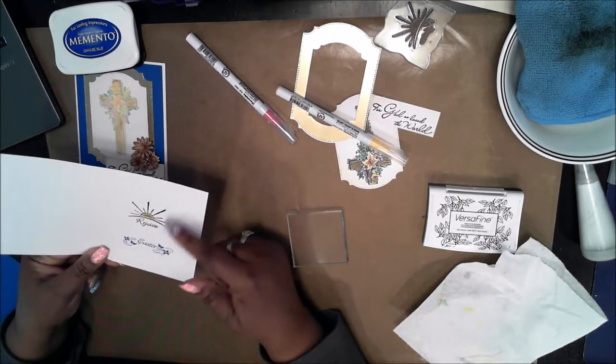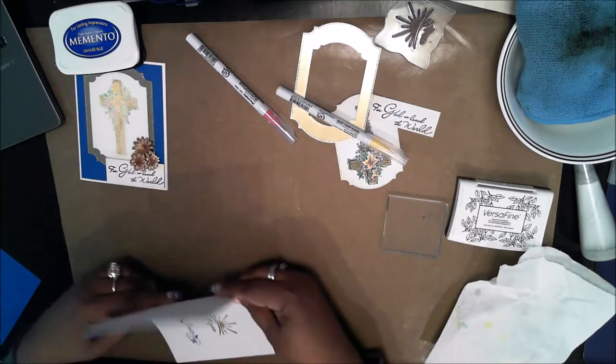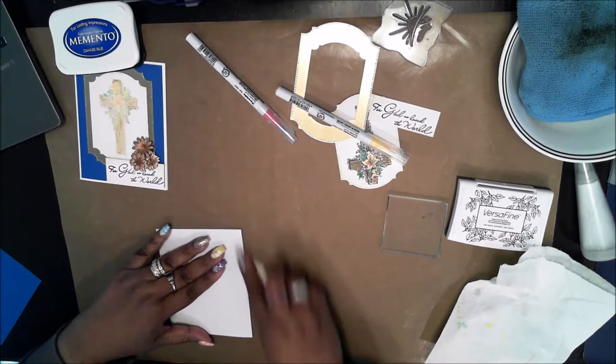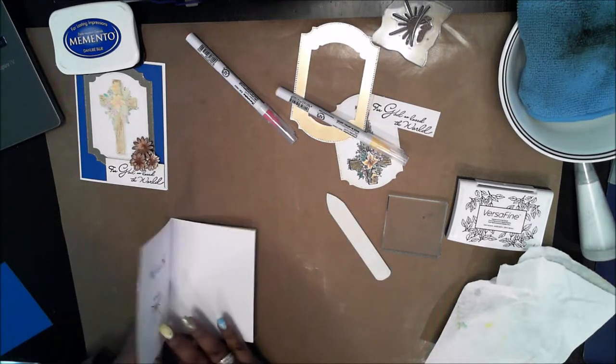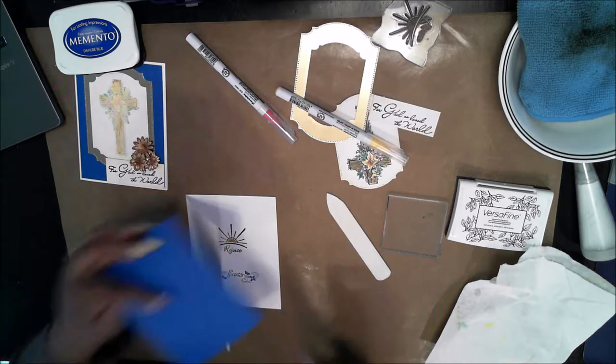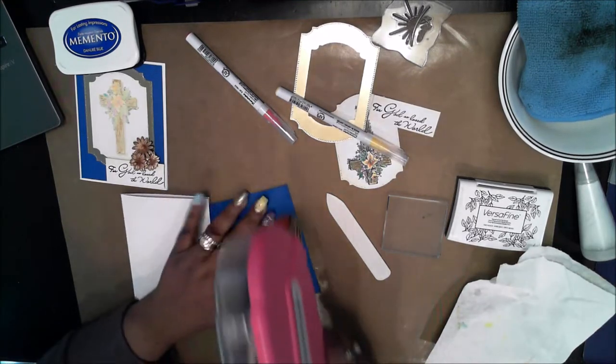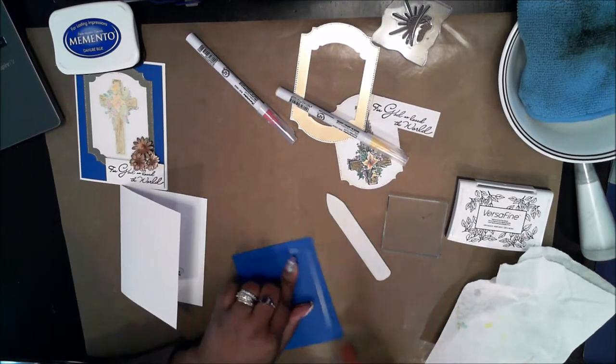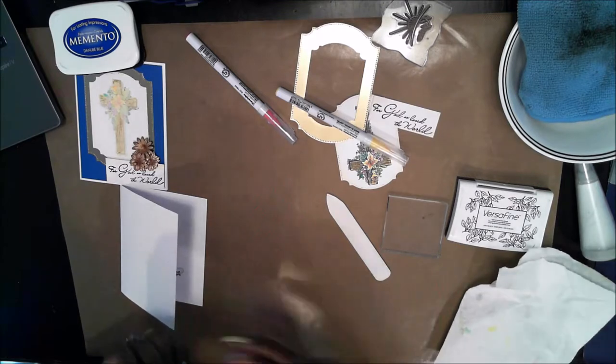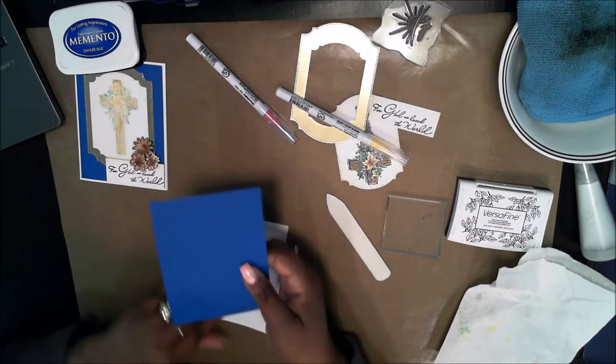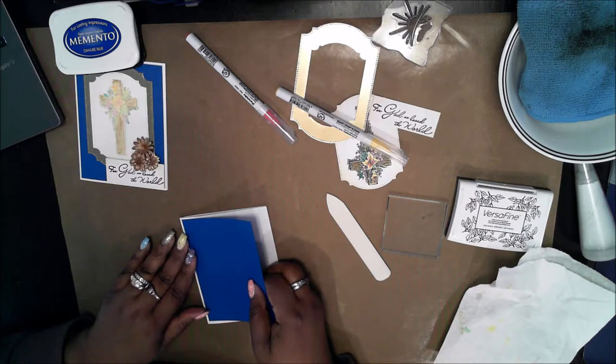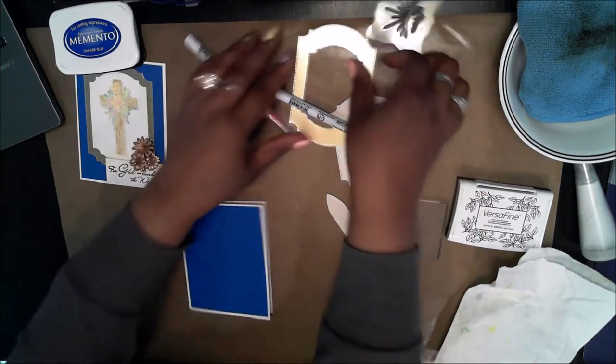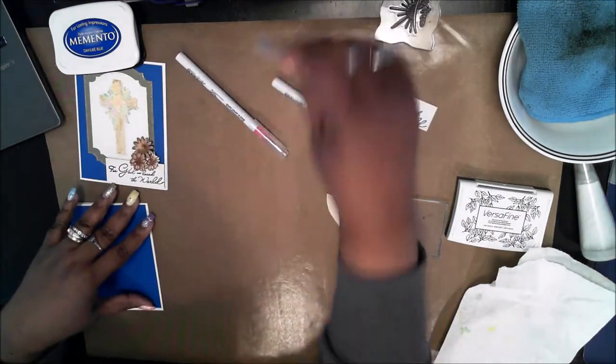Now take my bone folder, press a good seam in and I'm going to adhere the mat to the card front.